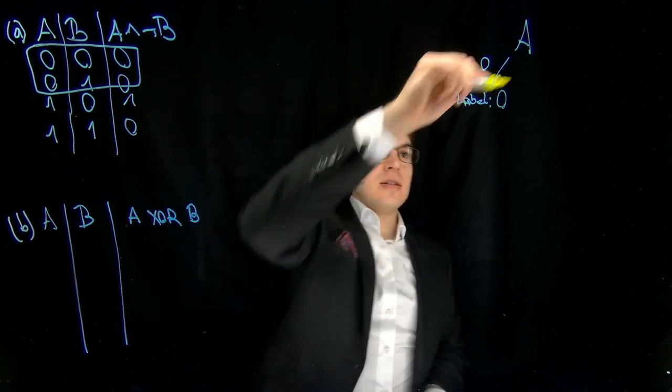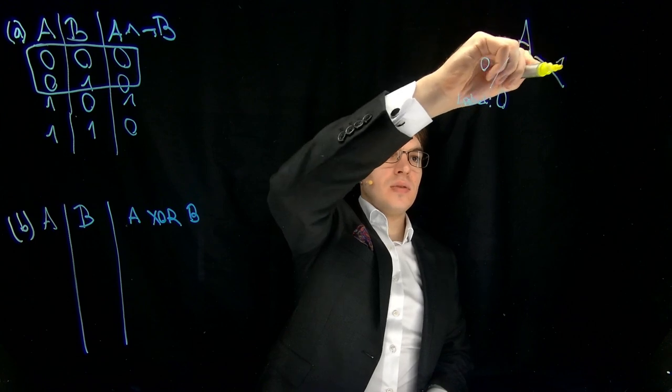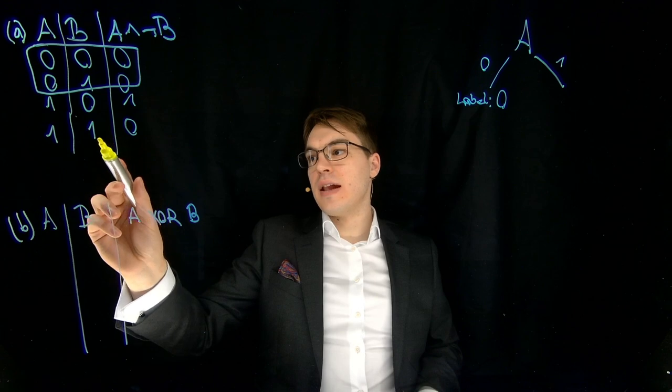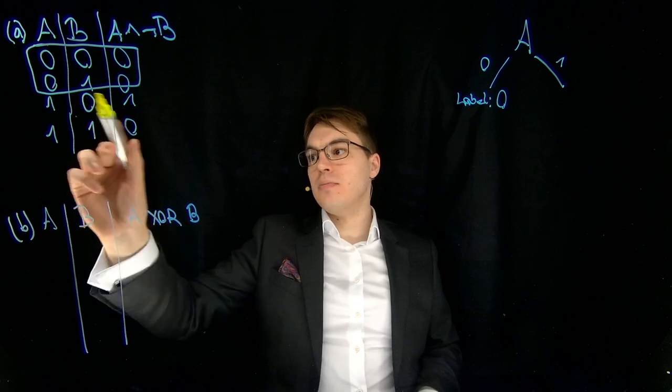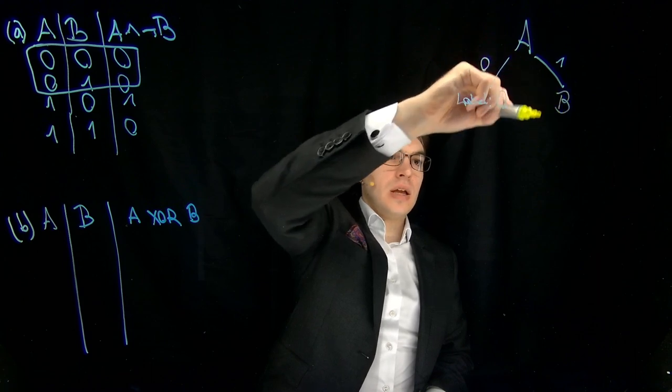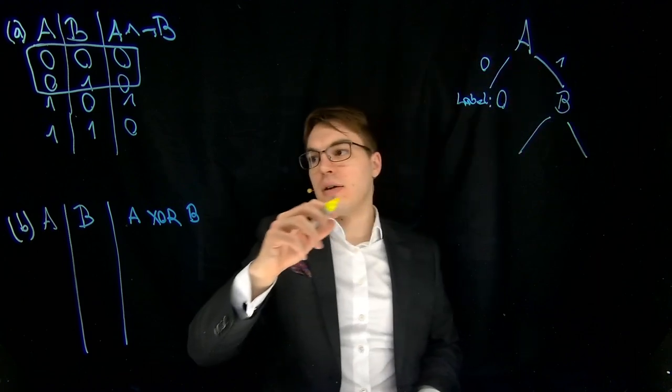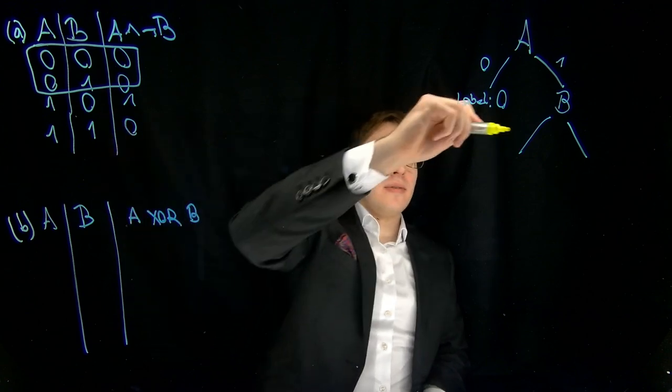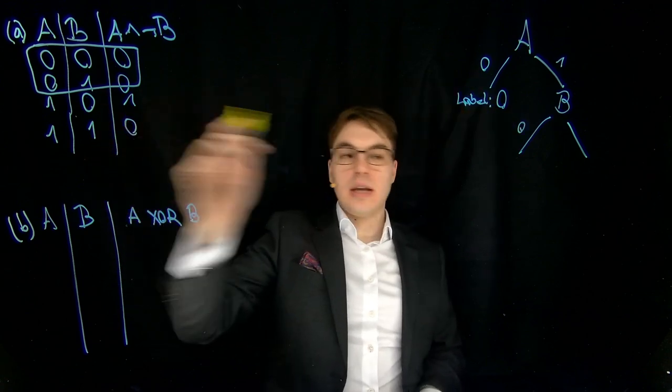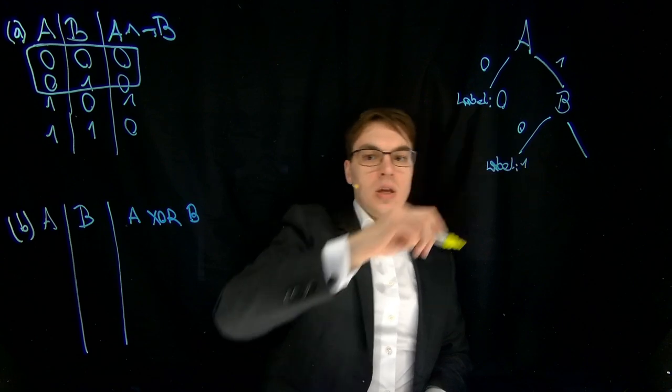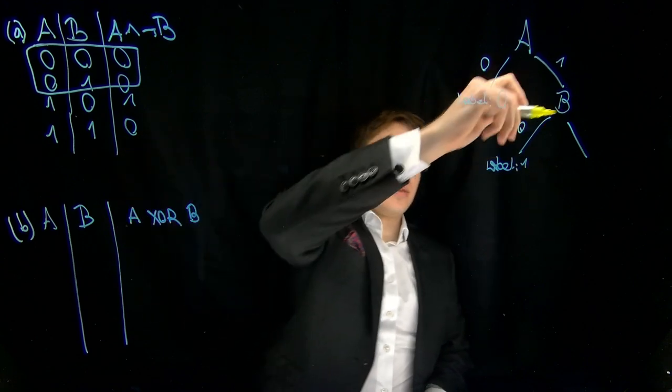And now let's have a look at the other case for A is 1. This is the part here below. And here the value really depends on B. So we have to get another split over there and just add the values. So for 0 we get the label 1, and for 1 we get the label 0.